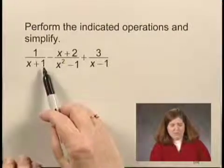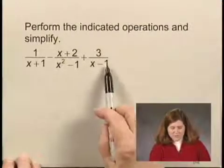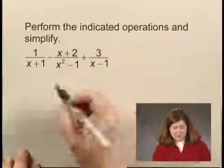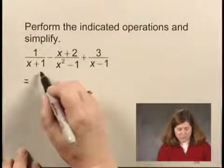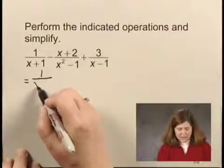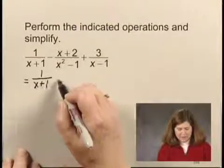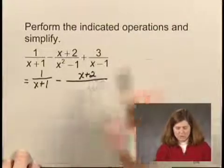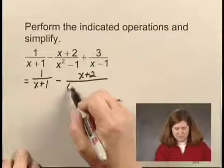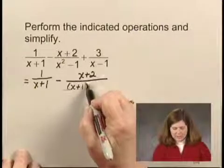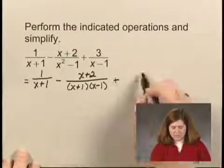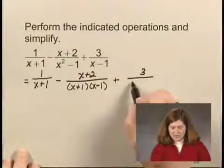x plus 1 is already in factored form, so is x minus 1, but we can factor x squared minus 1. So we rewrite the problem with 1 over x plus 1 minus x plus 2, and we'll write this denominator in factored form as x plus 1 times x minus 1 plus 3 over x minus 1.